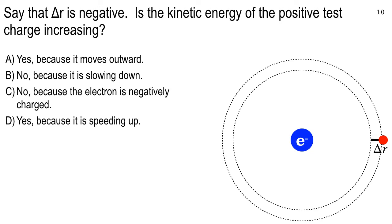Next question: delta R is negative — same trajectory. Go ahead and vote. Is it yes or is it no?